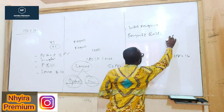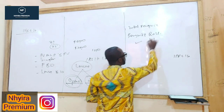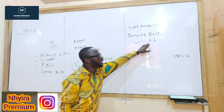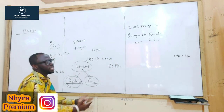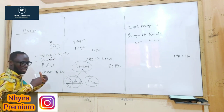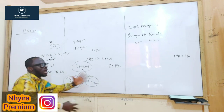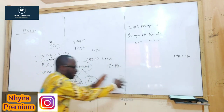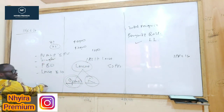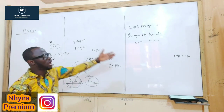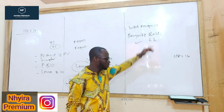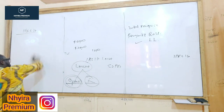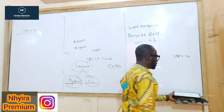On initial recognition, you recognize the right of use of the asset and at the same time you recognize the lease liability. The right of use asset represents the permission you have received to use the asset in your business. As long as the lessor has given you the asset and you are using it, you must recognize the right of use of the asset.